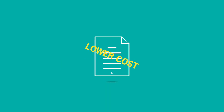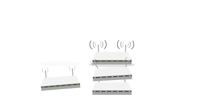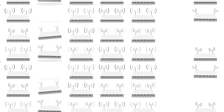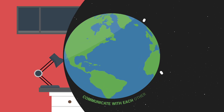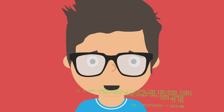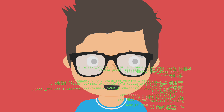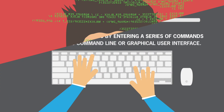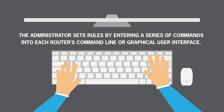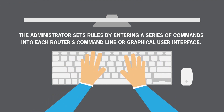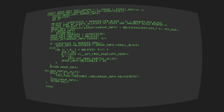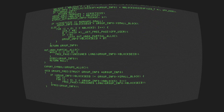SD-WAN is the best way to build and manage long-distance networks because it works smarter, faster, and at a lower cost than traditional networking. Traditional WANs are made up of hundreds, or sometimes thousands, of routers that communicate with each other across long distances. Those WANs have to be controlled by your system administrator to tell them how they should handle the traffic. The administrator sets rules by entering a series of commands into each router's command line or graphical user interface. This is a very technical, time-consuming task that can take hours to configure and is prone to human error.